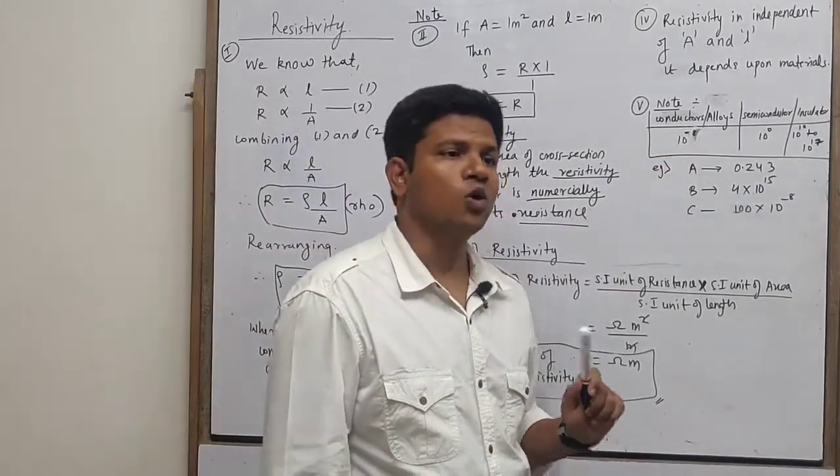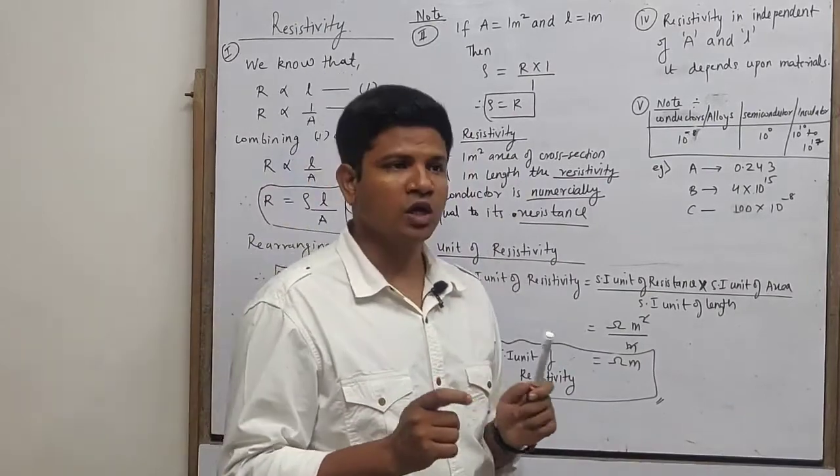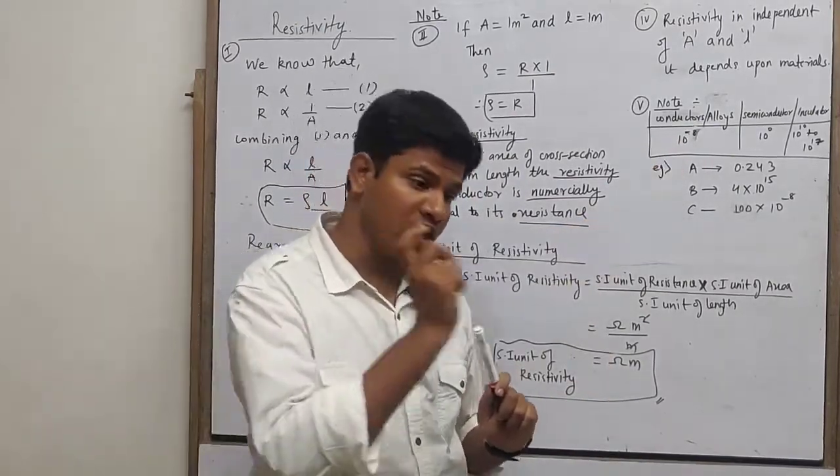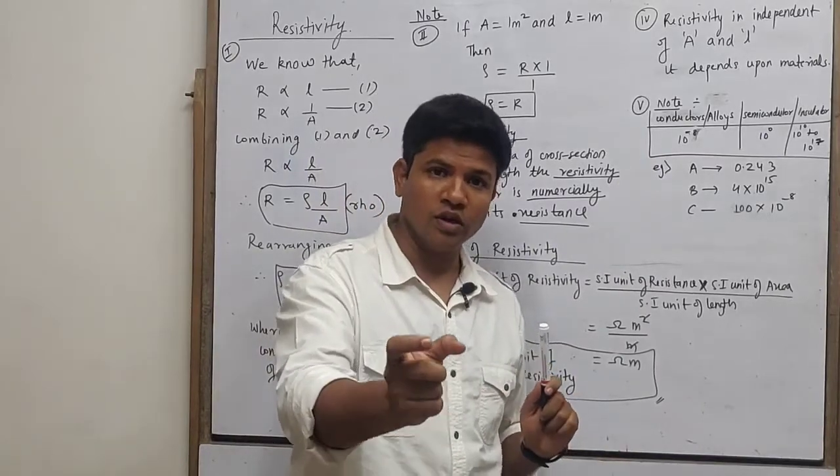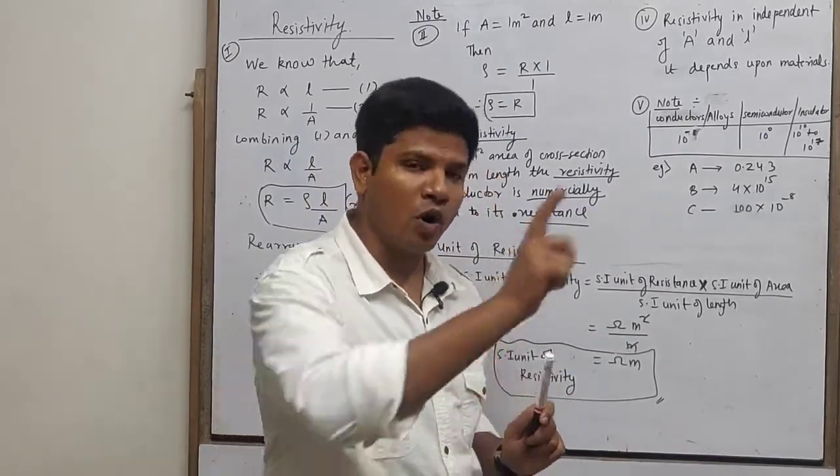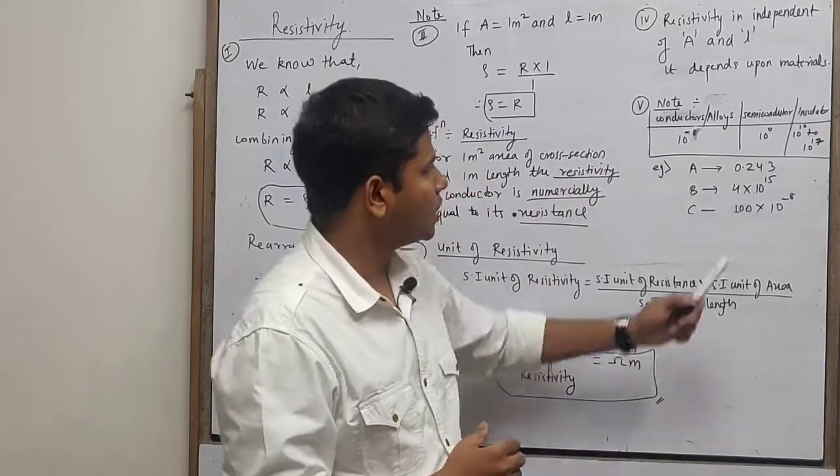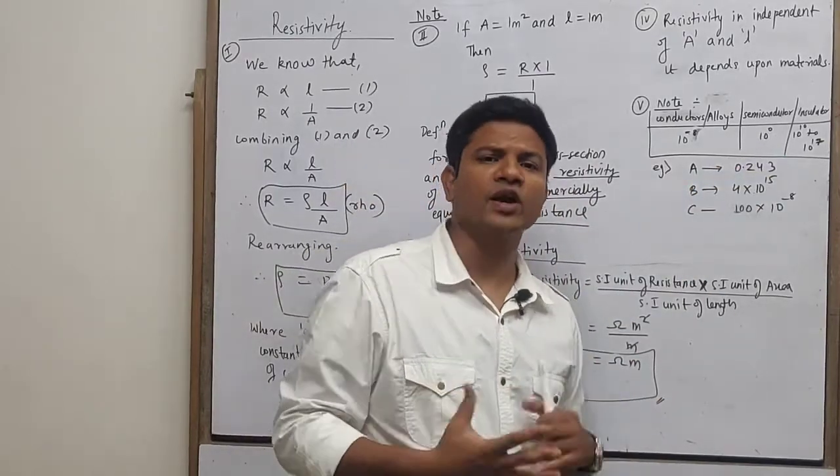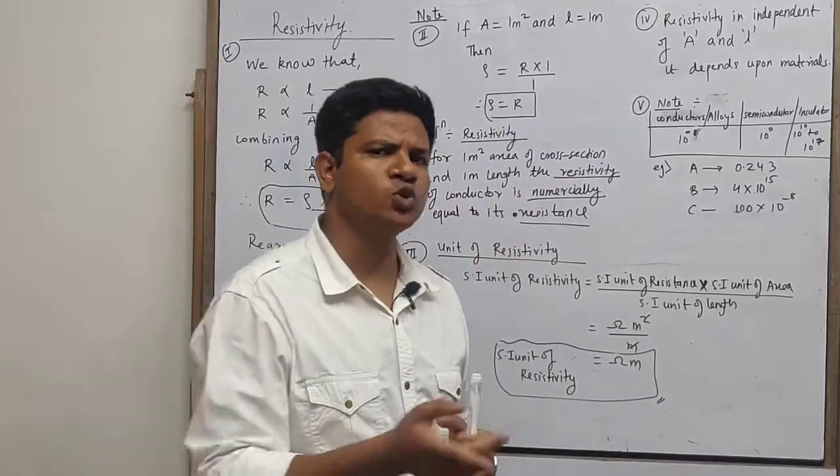Conductor and alloy have a resistivity value of 10 to the power minus 8. If it is a semiconductor, it is 10 to the power 0. Semiconductor is 10 to the power 0, and anything raised to 0 is 1.